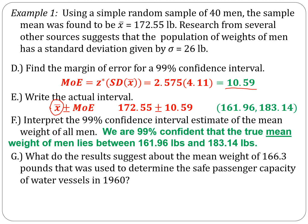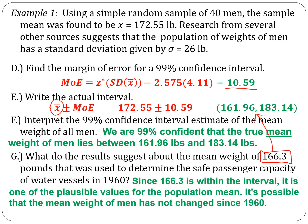What does this suggest about the mean weight of 166.3 pounds used back in 1960? Well, this is still a plausible value because it is within the range of the confidence interval we just calculated. So since it's in that interval, it's possible that it's still the same. However, we'd really want to collect more data to make this interval thinner and see if it remains in the interval or moves to the outside.